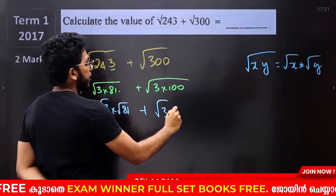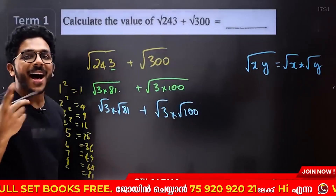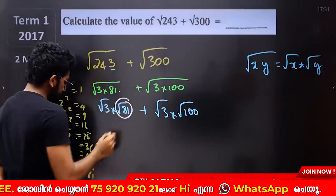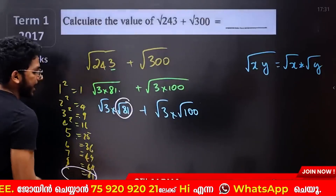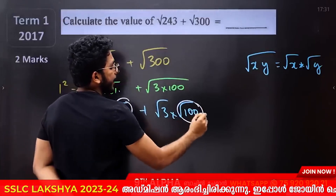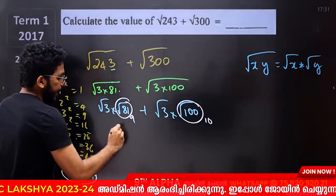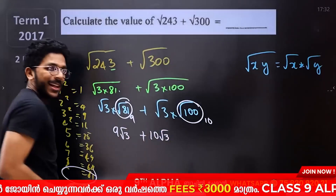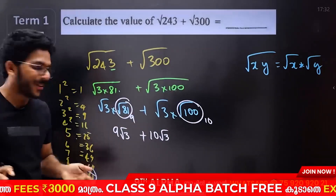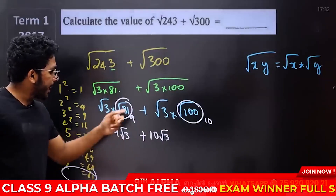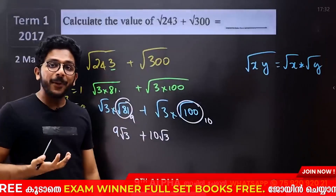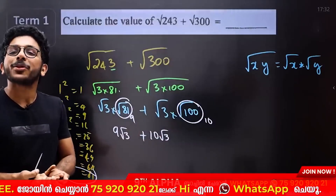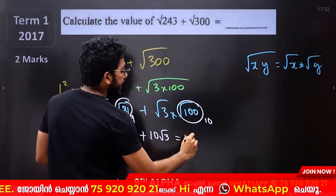Then root 3 into root 81 plus root 3 into root 100. Root 81 is 9, so we get 9 root 3. Root 100 is 10, so we get 10 root 3. Then 9 root 3 plus 10 root 3 equals 19 root 3.